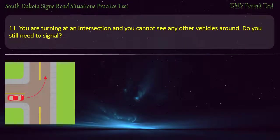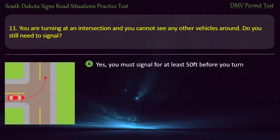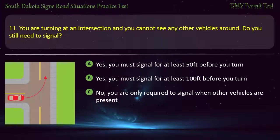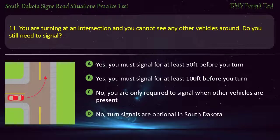Question 11: You are turning at an intersection and you cannot see any other vehicles around. Do you still need to signal? Options: Yes, you must signal for at least 50 feet before you turn; Yes, you must signal for at least 100 feet before you turn; No, you are only required to signal when other vehicles are present; No, turn signals are optional in South Dakota. Answer: Yes, you must signal for at least 100 feet before you turn.